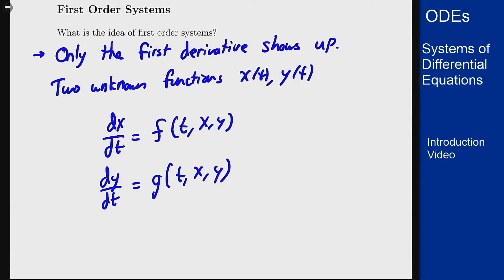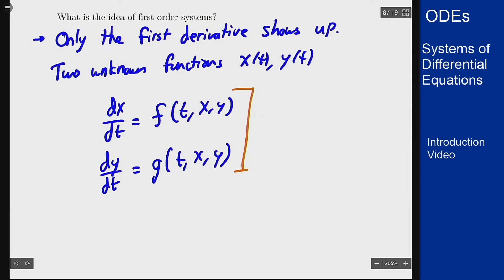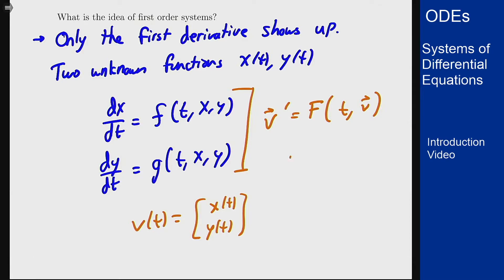We can also think about these in a vector form where we think of the vector v as a function of t to be stacking x of t and y of t on top of each other. Then we can rewrite this as the derivative of v equals some function capital F of t and the vector v, where F as a vector is the function given by f of t and v, g of t and v.